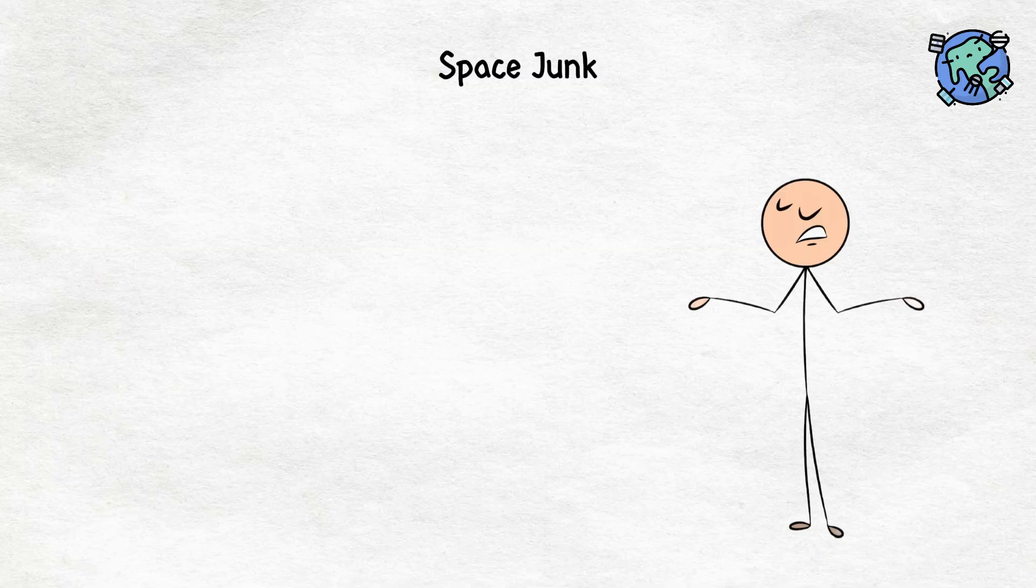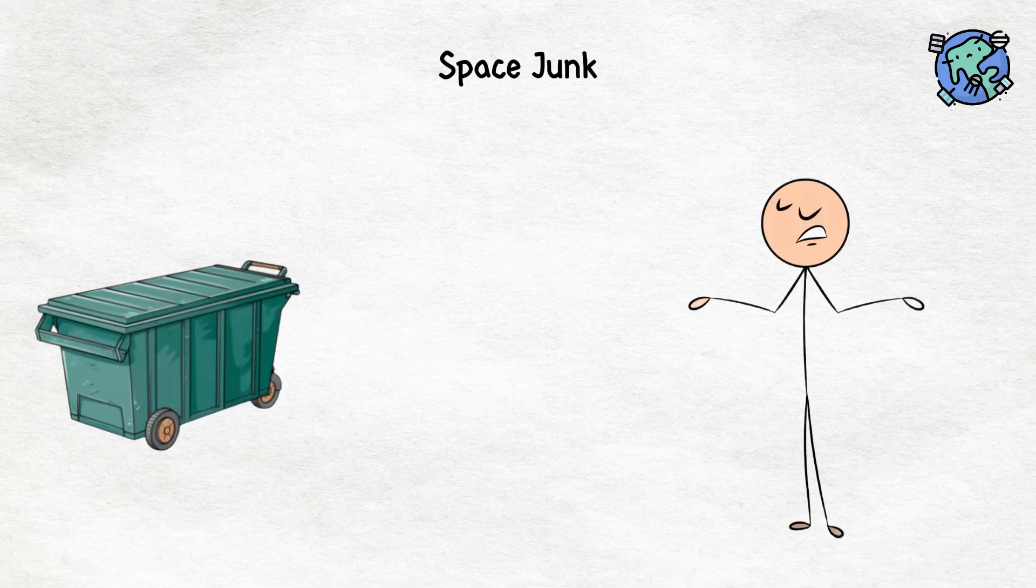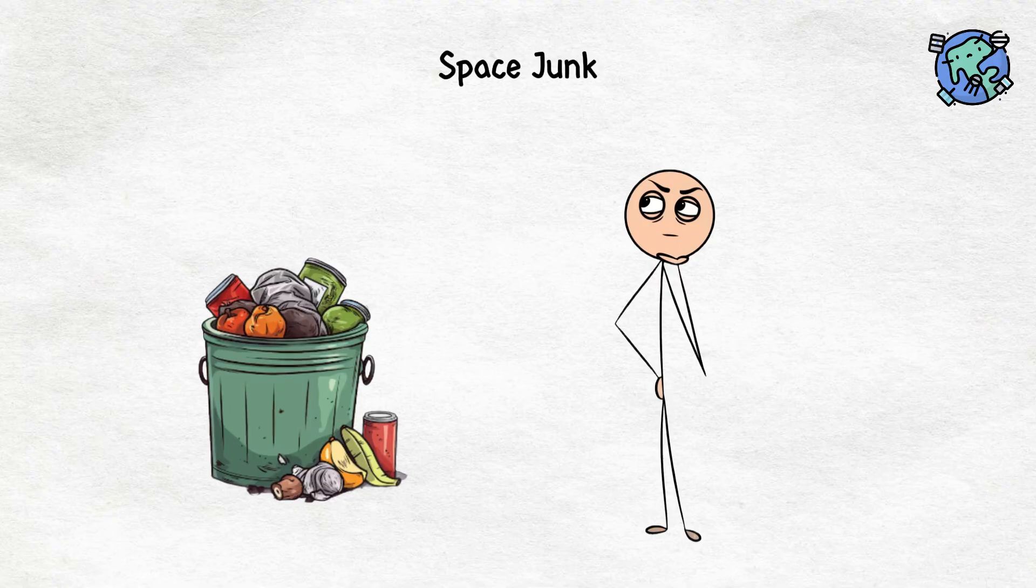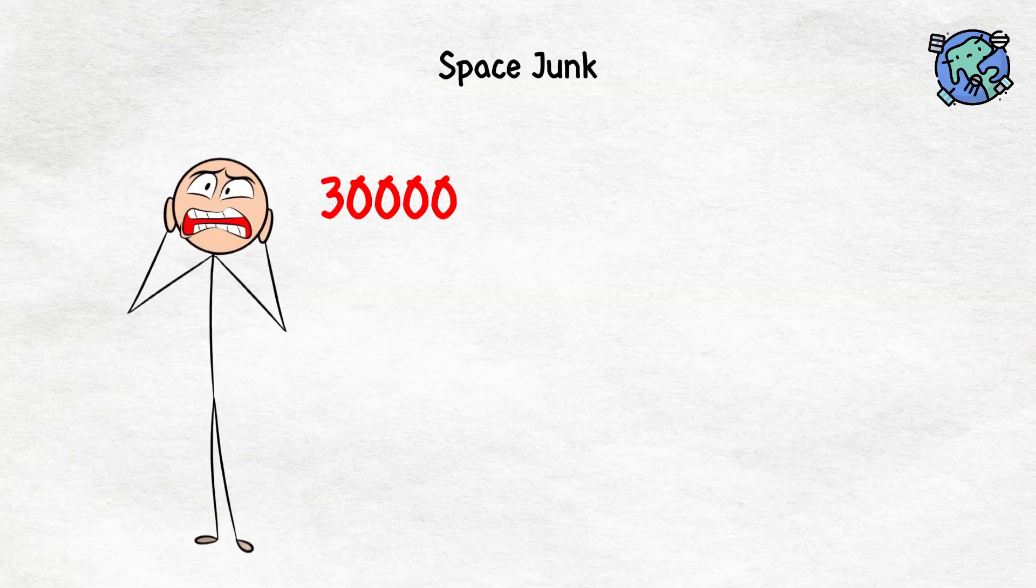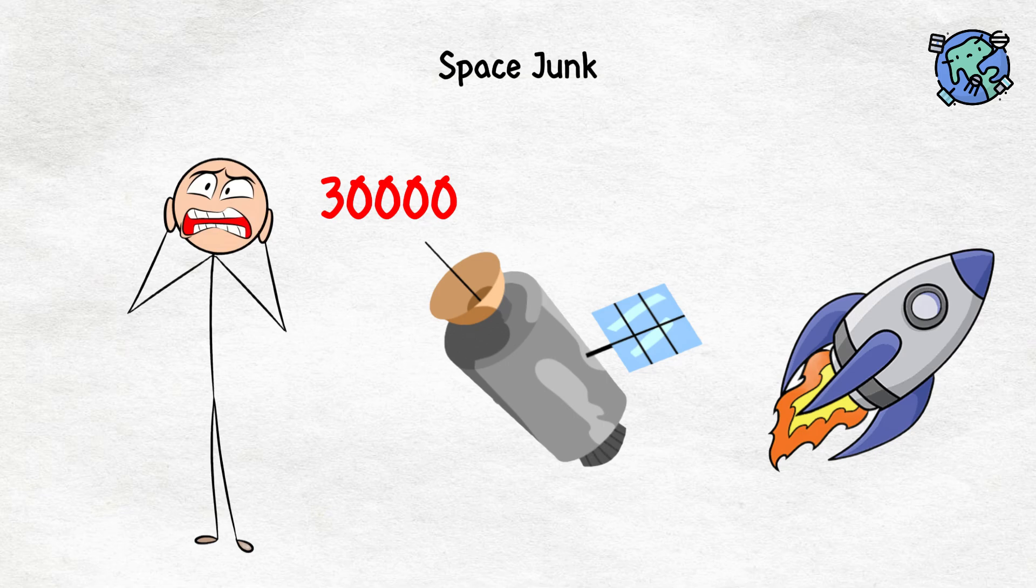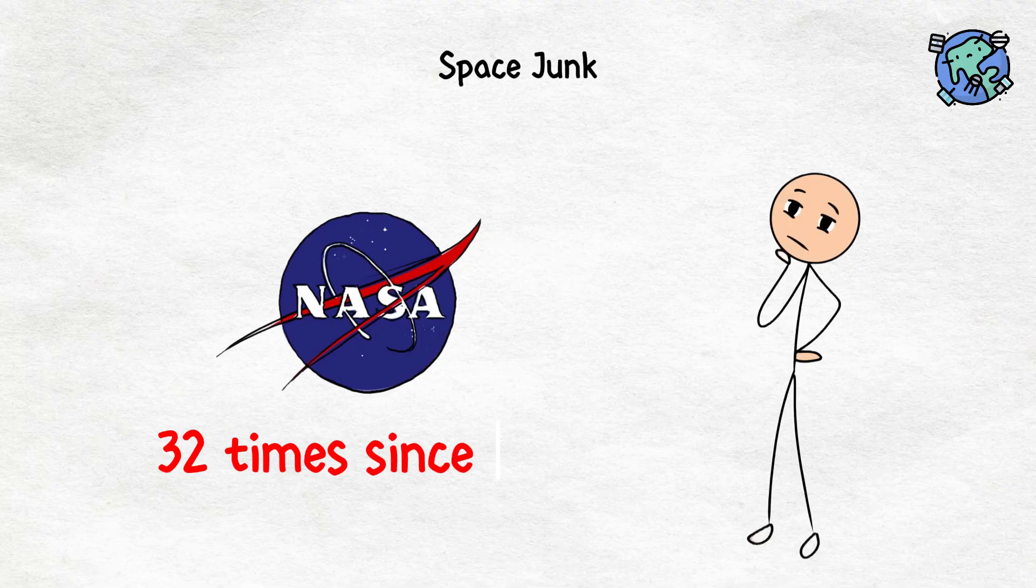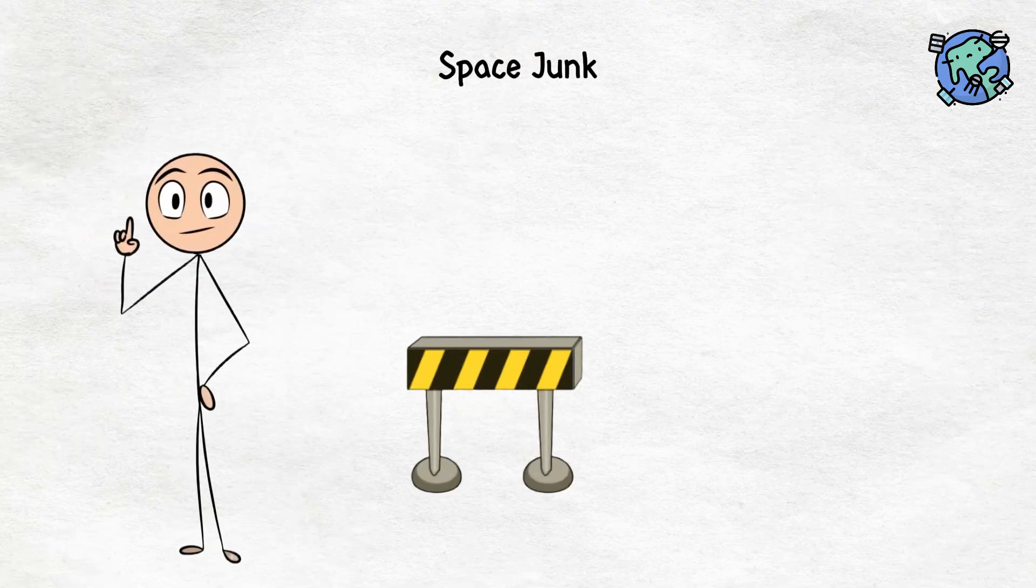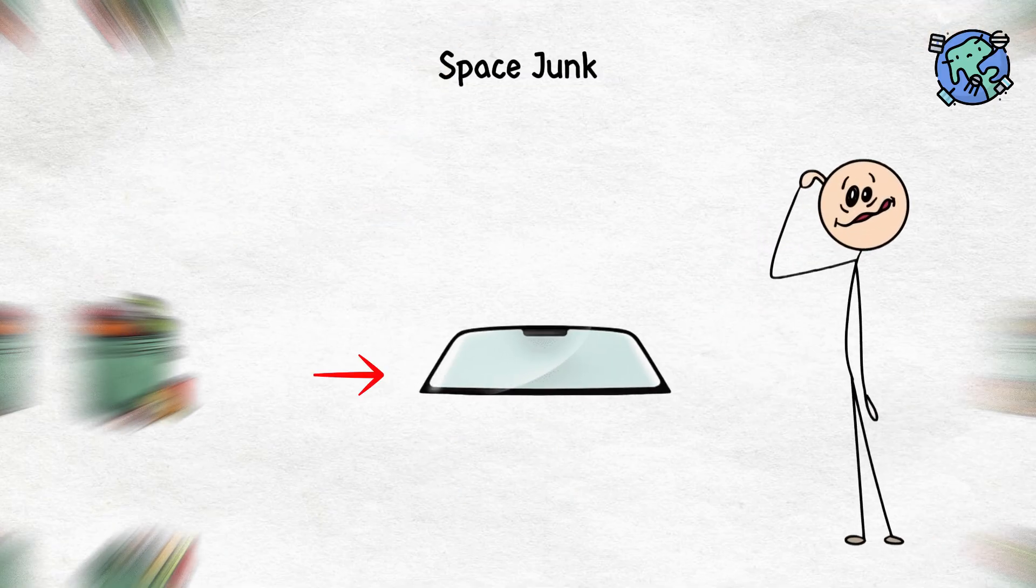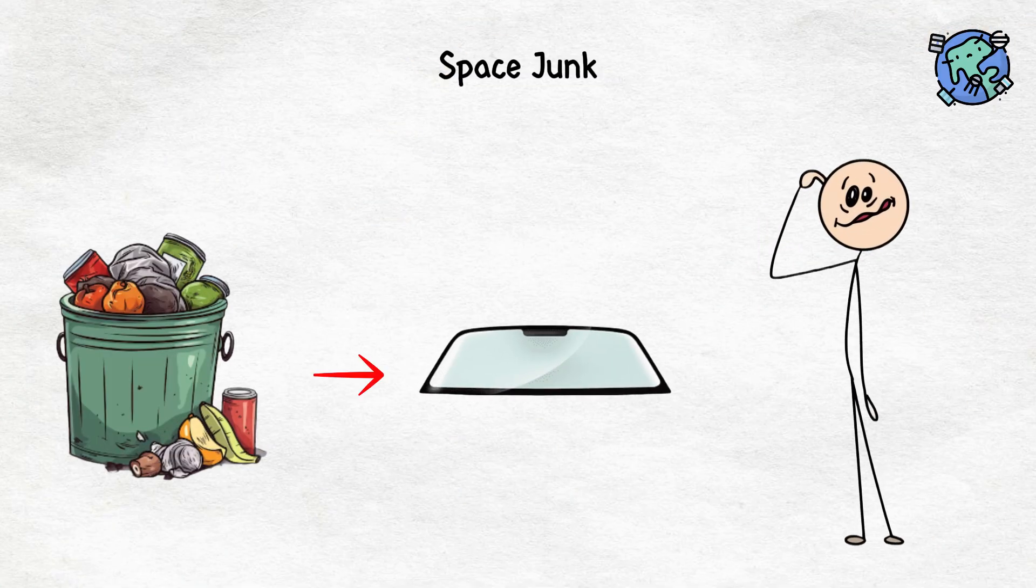Turns out we have been treating space like a giant dumpster for decades. Right now, there are over a million pieces of man-made debris orbiting Earth. And around 30,000 of those are big enough to completely ruin a satellite or crash into a rocket trying to leave Earth. NASA has had to dodge space junk 32 times since 1999. Imagine trying to parallel park a spacecraft while someone keeps throwing trash at your windshield. Not fun.